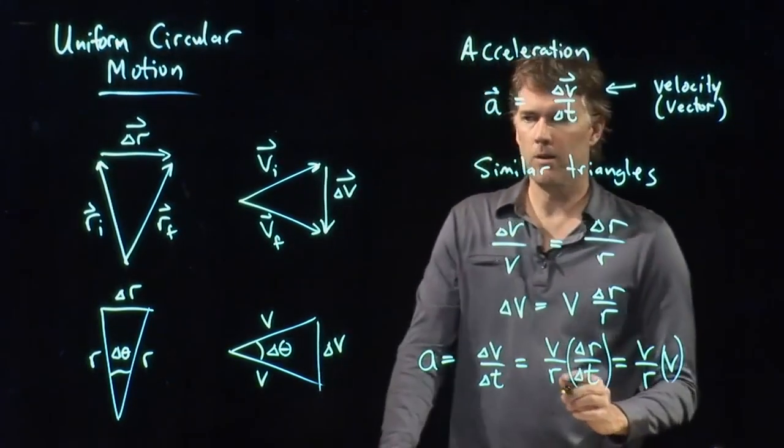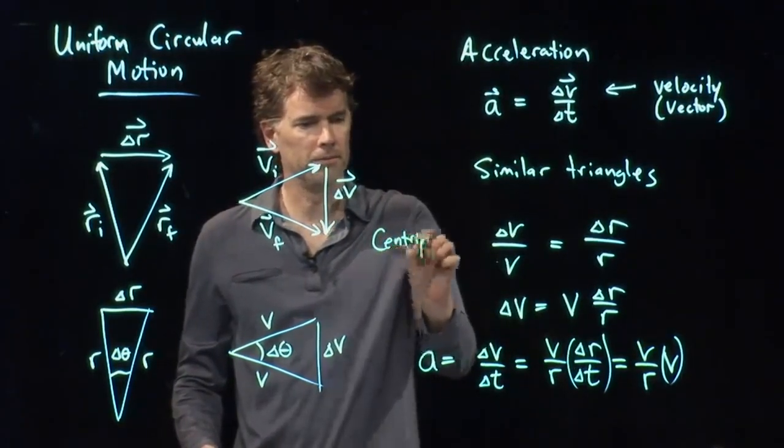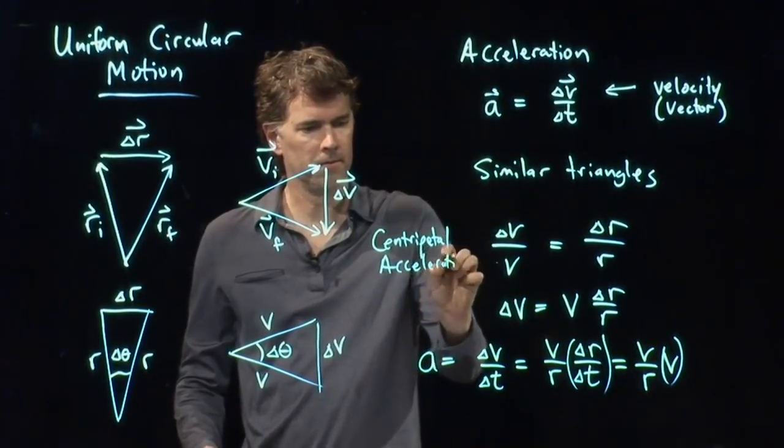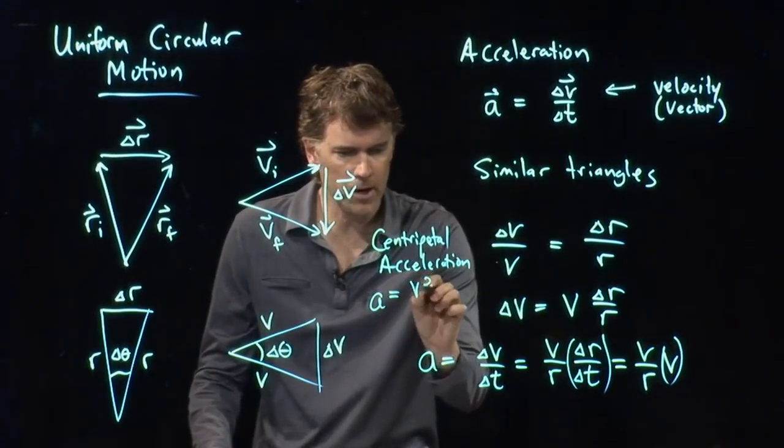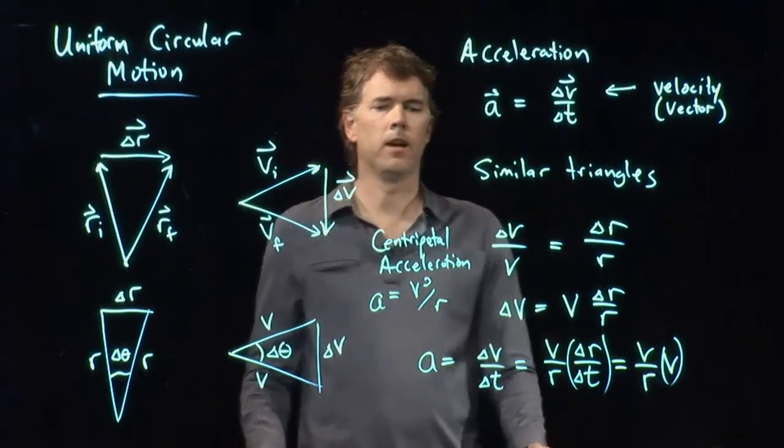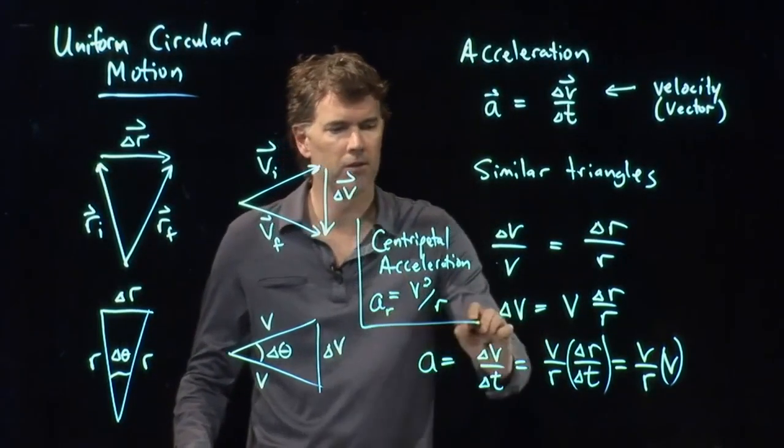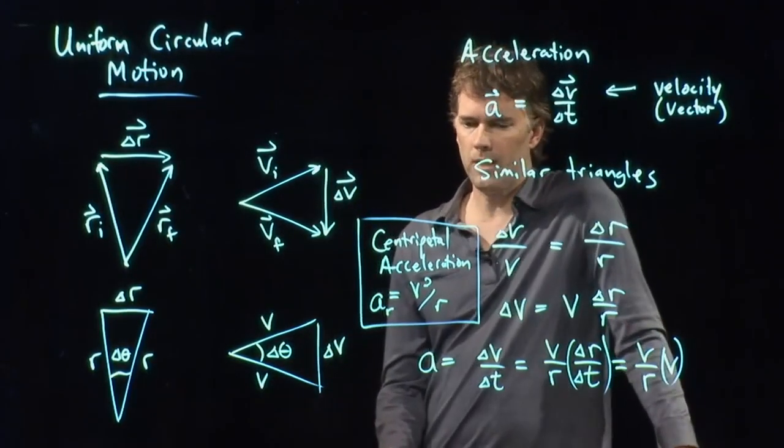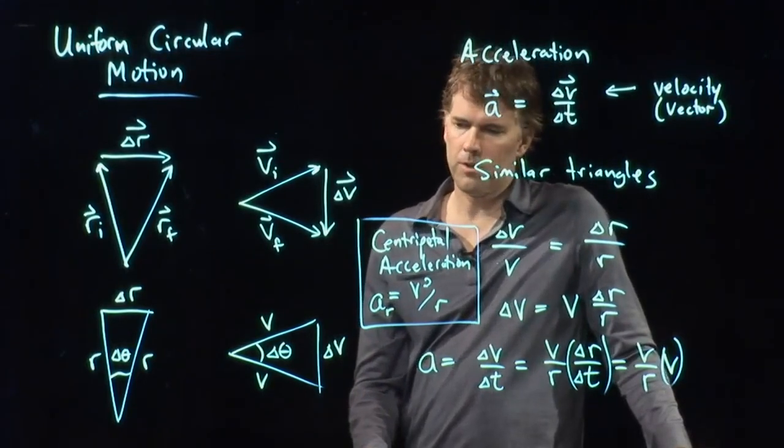And so we get what we now call centripetal acceleration. And it is a equals v squared over r. And we typically put a little subscript on it, either c or r. I like to use r for radial. Some people use c for centripetal.